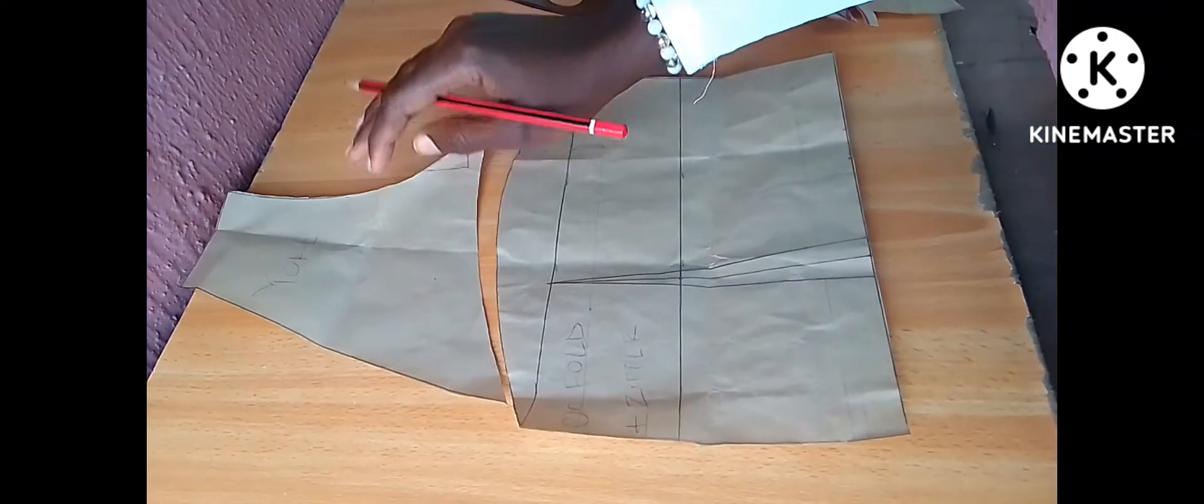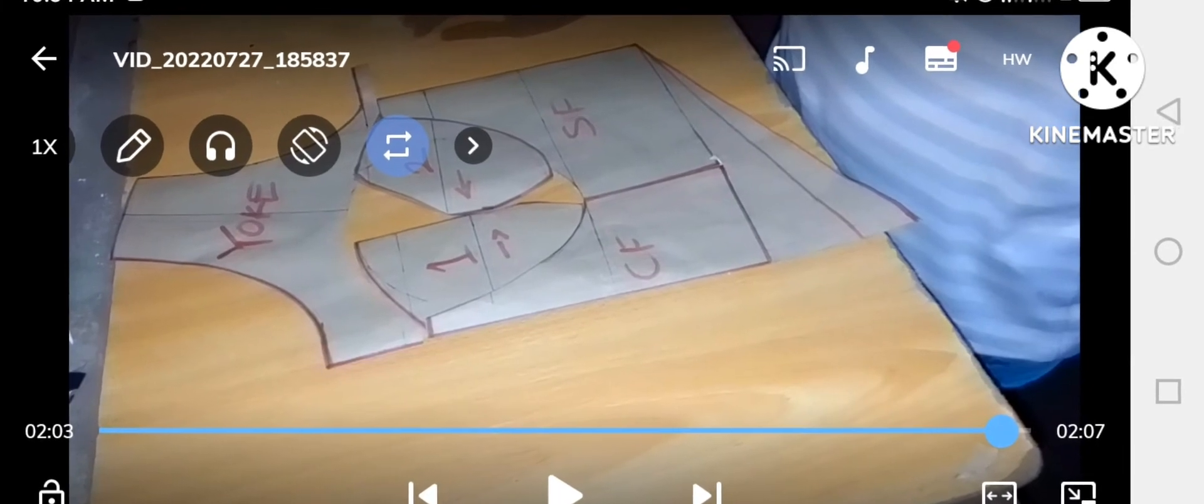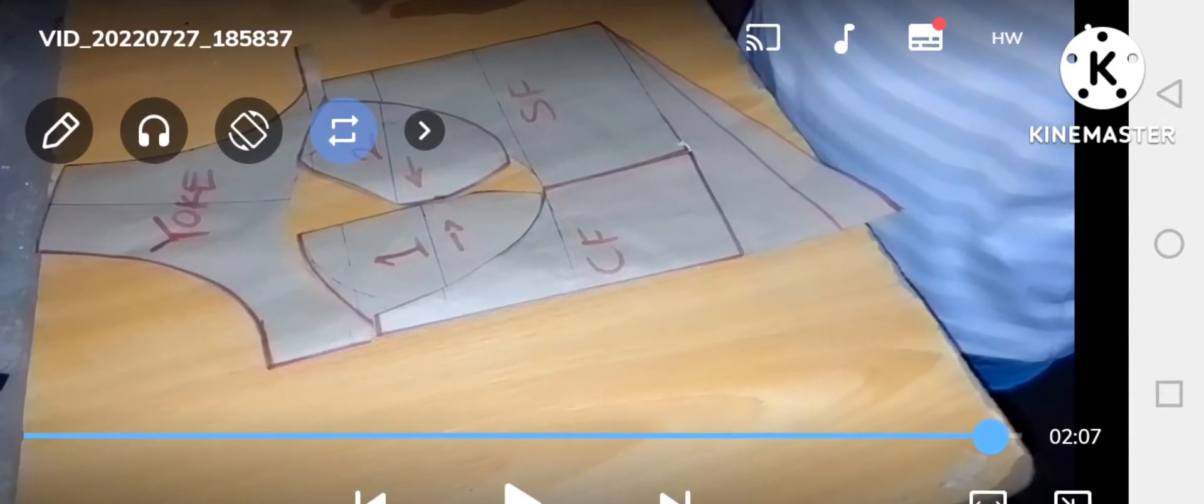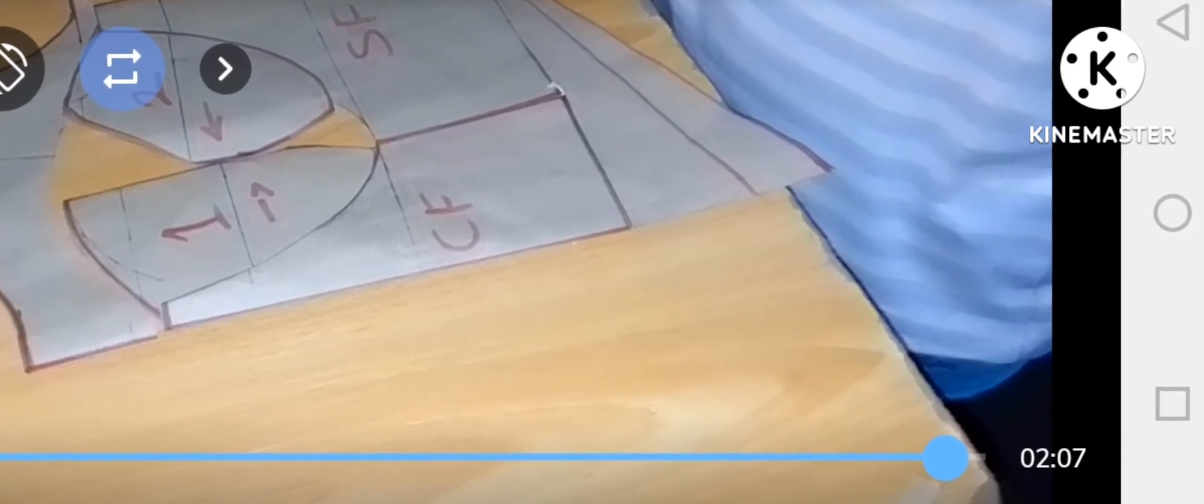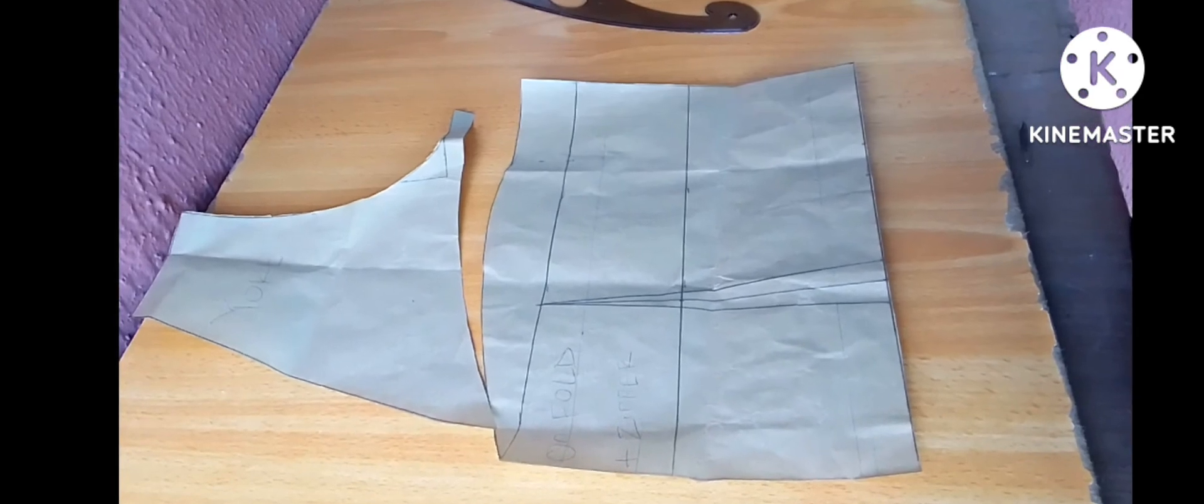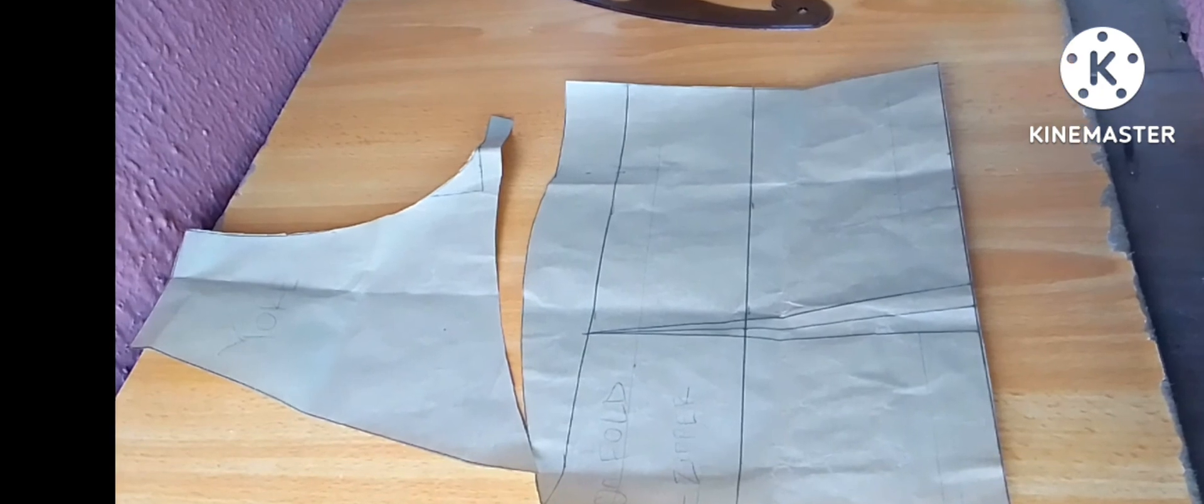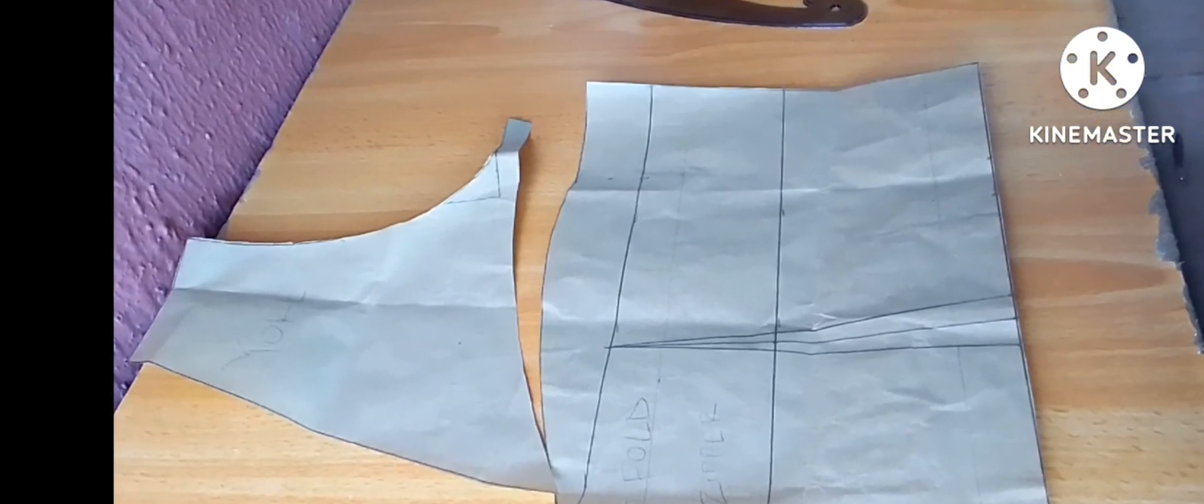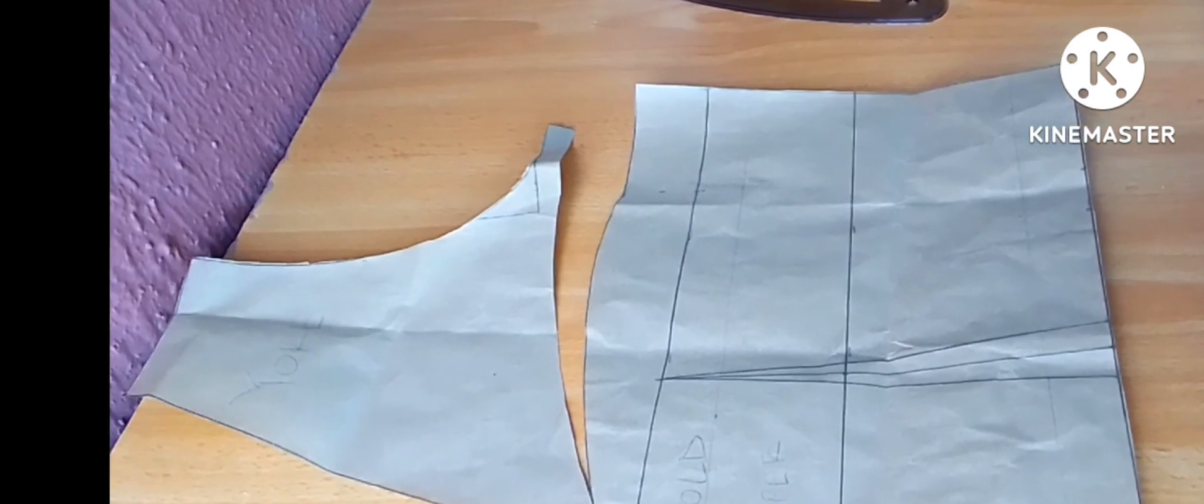So guys this is basically all for your two-part corset with a yoke and a basque waist. So stay tuned to my channel for you to see how beautiful this is going to come out in the fabric. If this has been helpful to you don't forget to like, don't forget to share with your friends, don't forget to subscribe to my channel and please hit the notification bell so that you get notified when I post new videos. Thank you so much for watching to the end of this video. See you in my next video, bye!